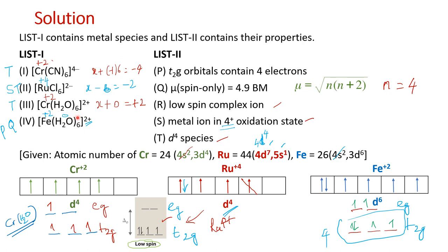For the chromium aqua complex: oxidation state is +2, it is a d4 species — so option t fits. It is not a low spin complex with weak field water, so r is ruled out. With 4 unpaired electrons the spin-only magnetic moment is ~4.9 BM, fitting option q. Option p (t2g contains 4 electrons) does not fit for chromium aqua since one electron is in eg. So for chromium aqua complex the answers are q and t.